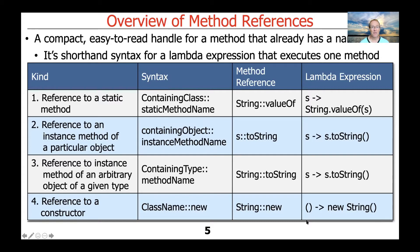Method references are super-duper cool and very concise. Let's take a look at the different forms — there are basically four different types of method reference forms. One is a reference to a static method. So if you had a class like String and you wanted to reference a static method, you can have a method reference that would be String::nameOfStaticMethod.